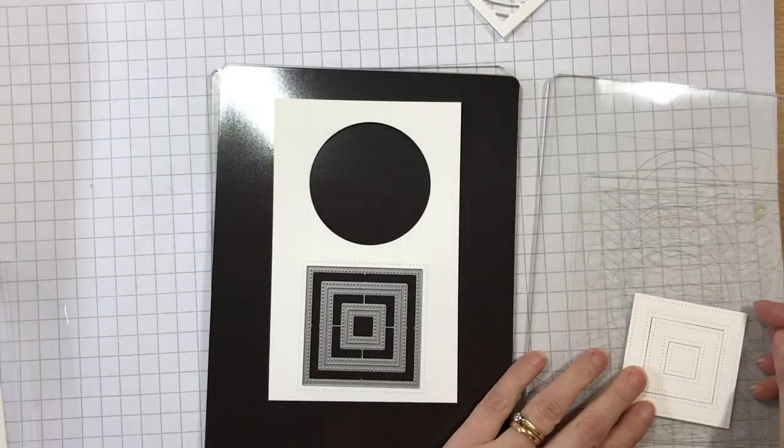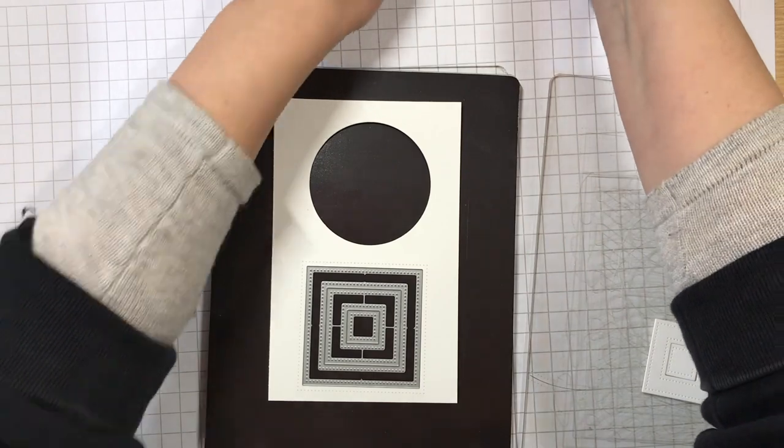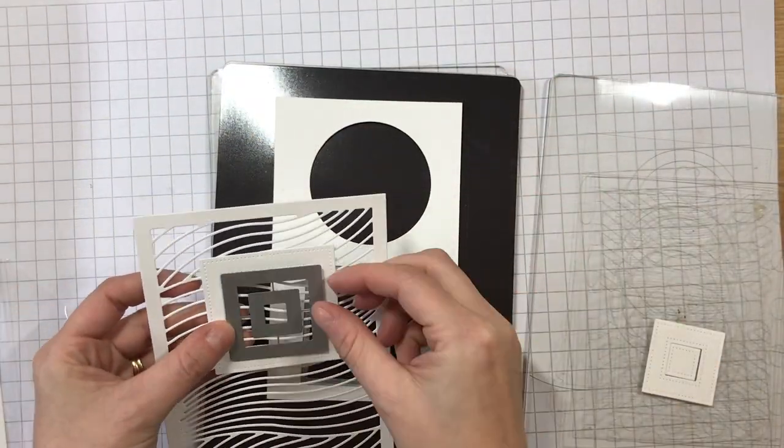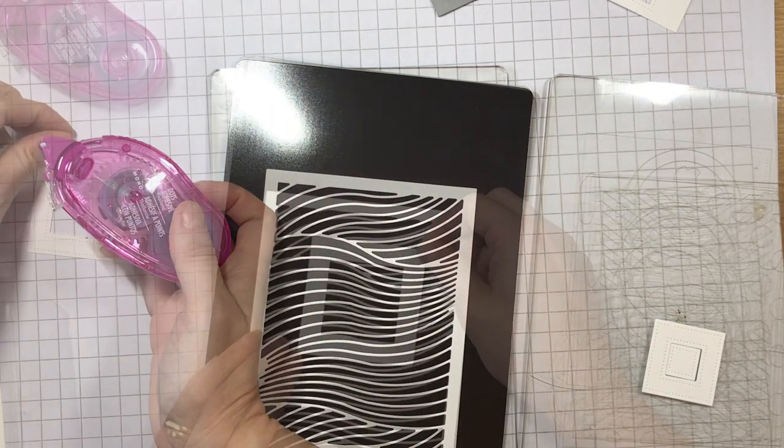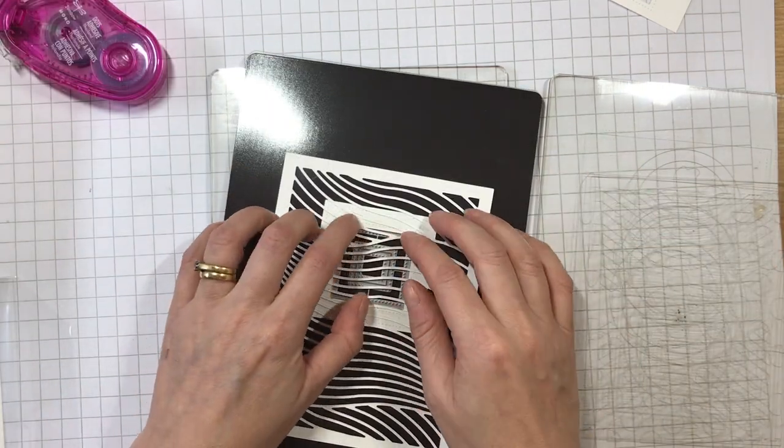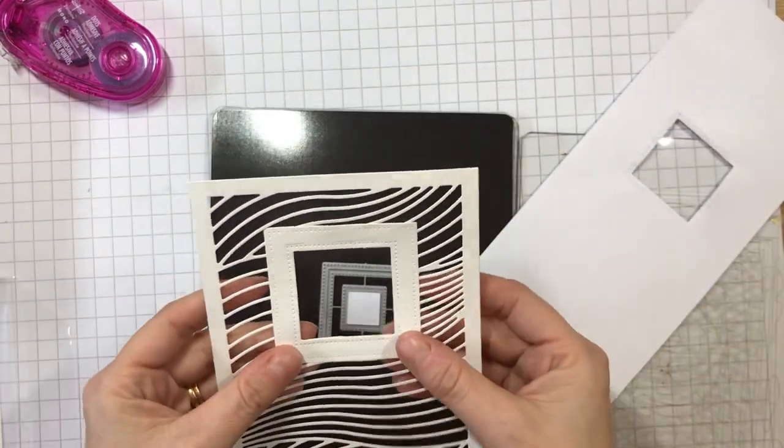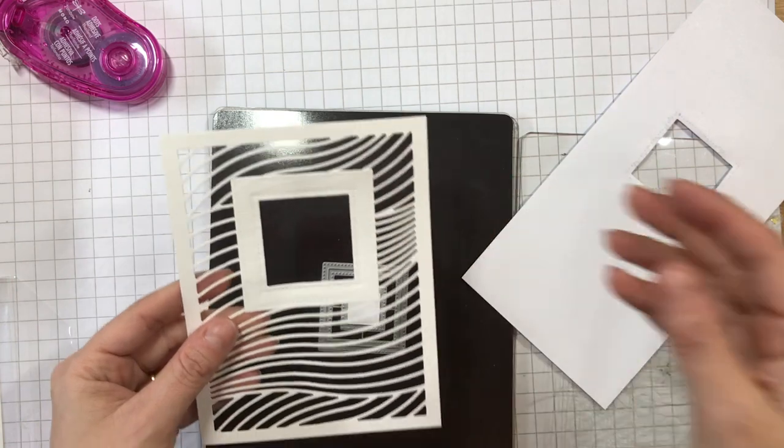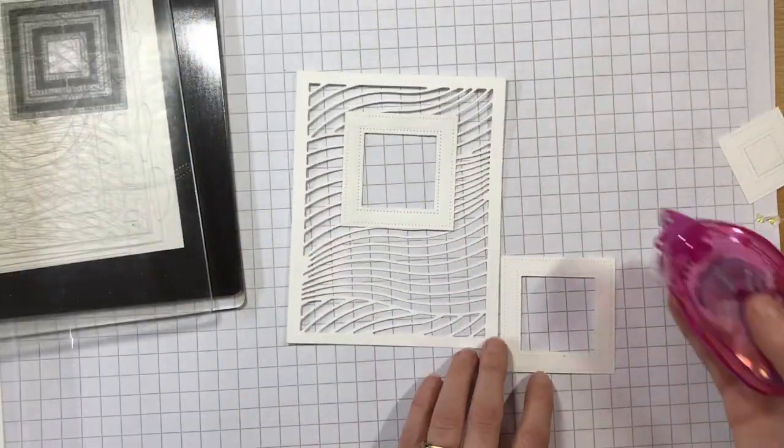I place the dies face up on the magnetic shim of the Gemini and then die cut the frame. I taped this into place on the front of the wave panel and then placed the die over it to cut away the center of the square. I decided to cut a second frame and adhere that over the front just because it looked better. You don't have to do that part, but it does give it a nicer finish overall.